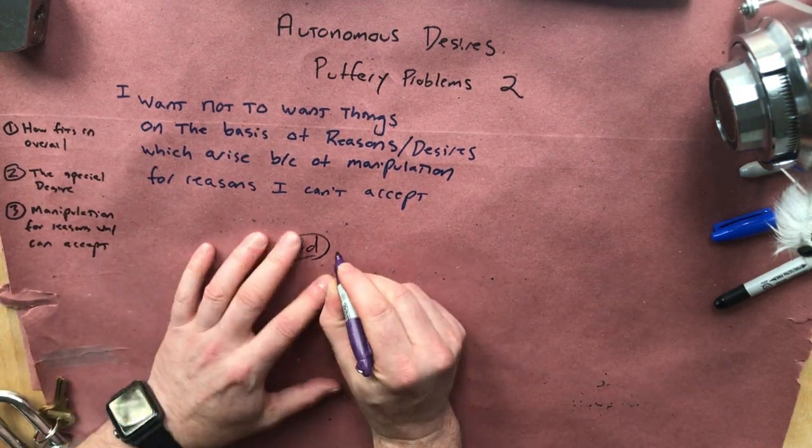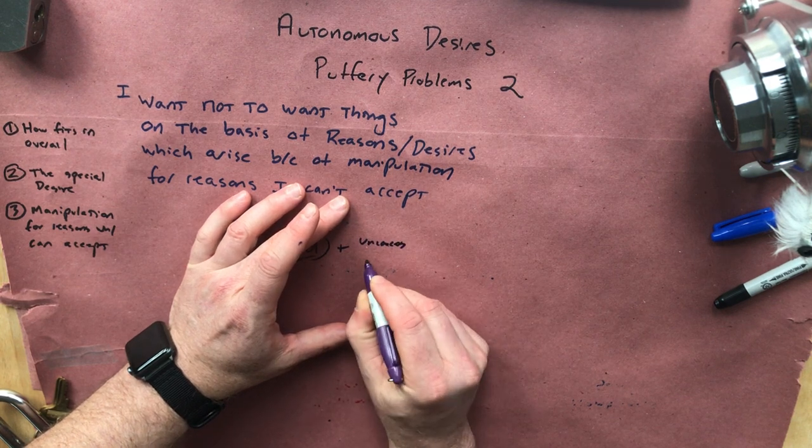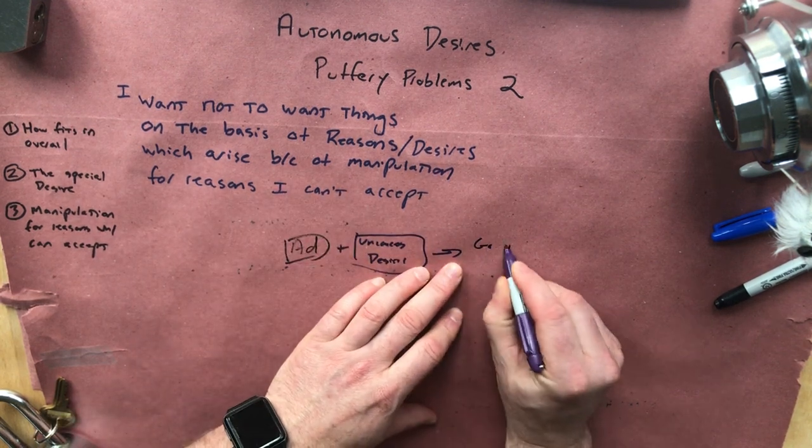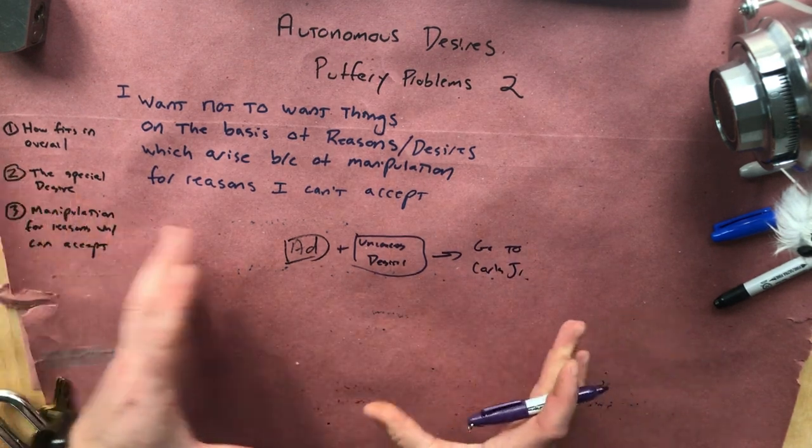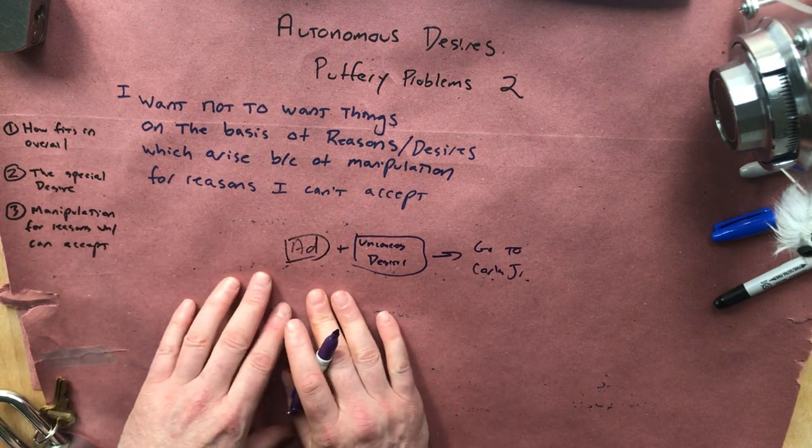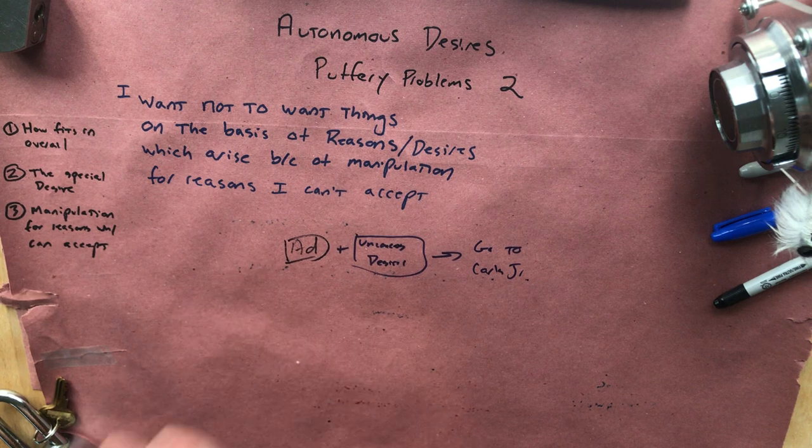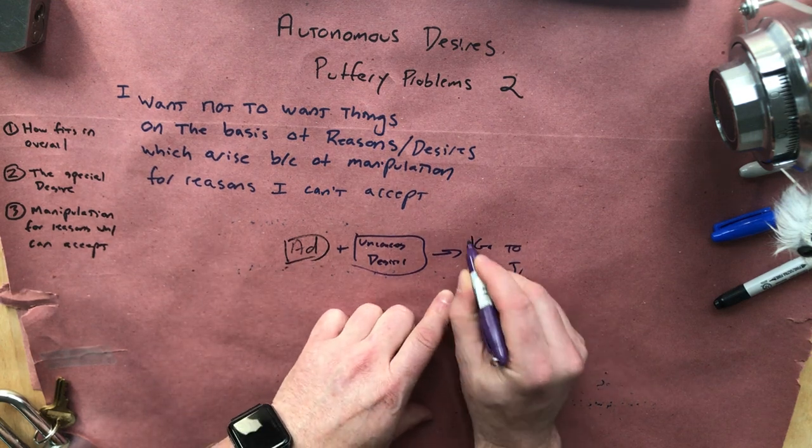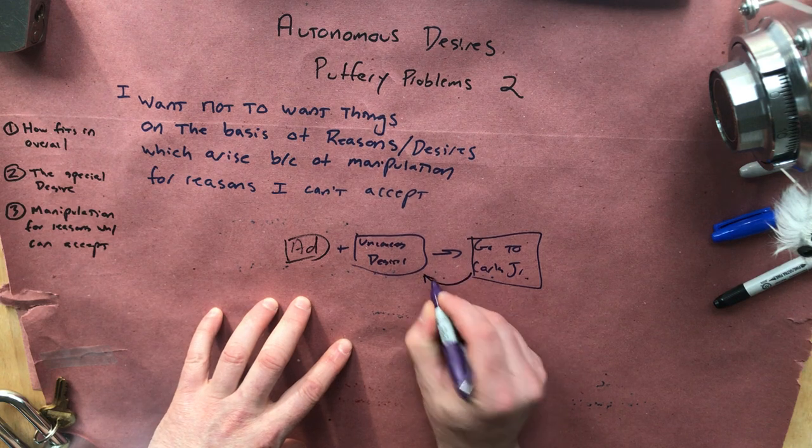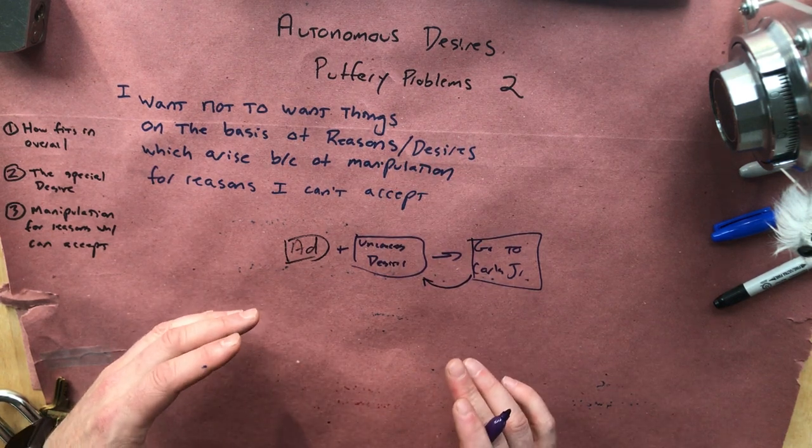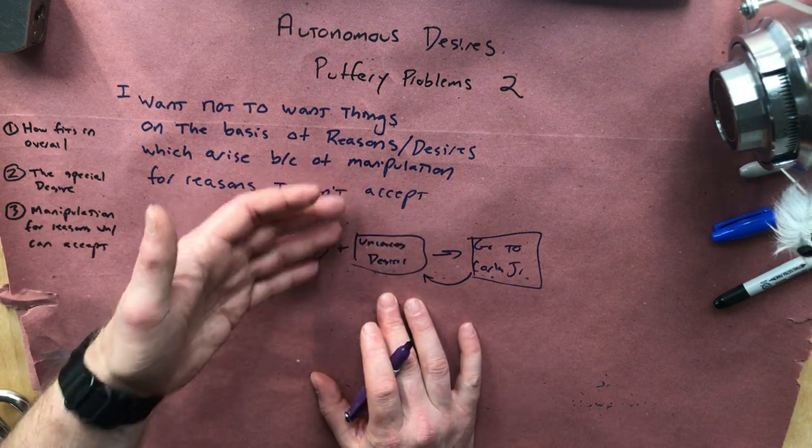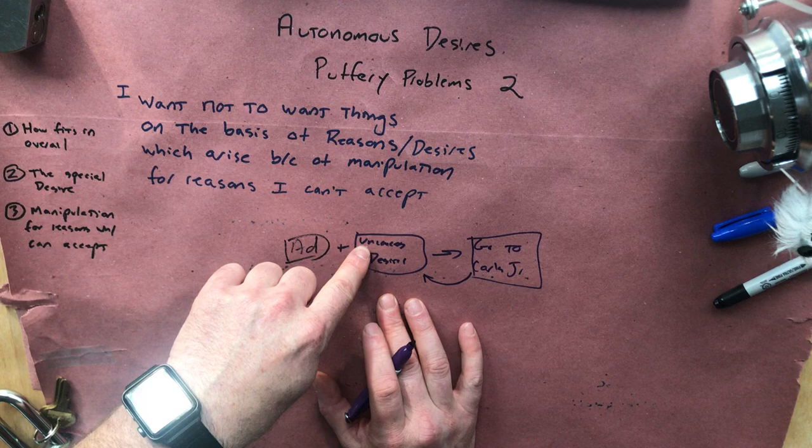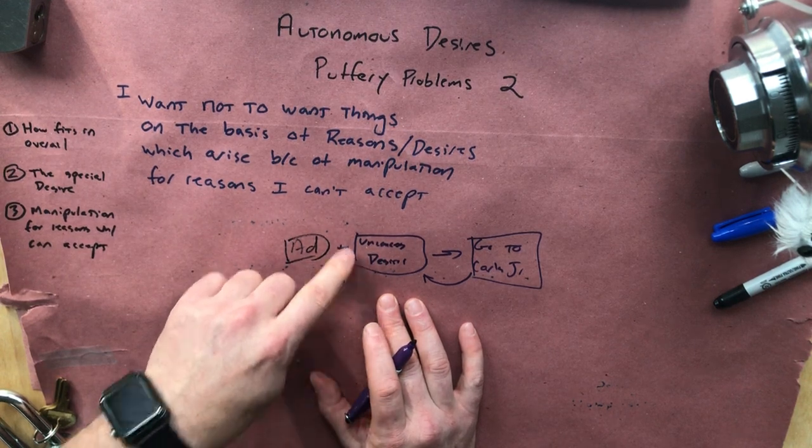So again, you have the ad plus the drive states that make you sort of then have the desire to do the thing, do the thing the advertisement wants you to do. And the idea, so even if when you realize that you have this desire and you realize that you have it because of that, even then, Chris thinks you're not going to be able to say, yeah, well, it came about in this kind of stupid way. But I still endorse it because this is going to get in the way of that. The reason why you want this is because you were manipulated and the manipulation was not the kind of manipulation that you're okay with.